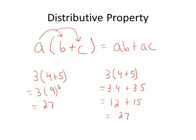In this arithmetic case, it would be better to do the problem the first way. But if I had an expression like 3 times x plus 5, I can't add x and 5 together. So if I'm going to simplify this, the only thing I can do is distribute the 3 into the parentheses.